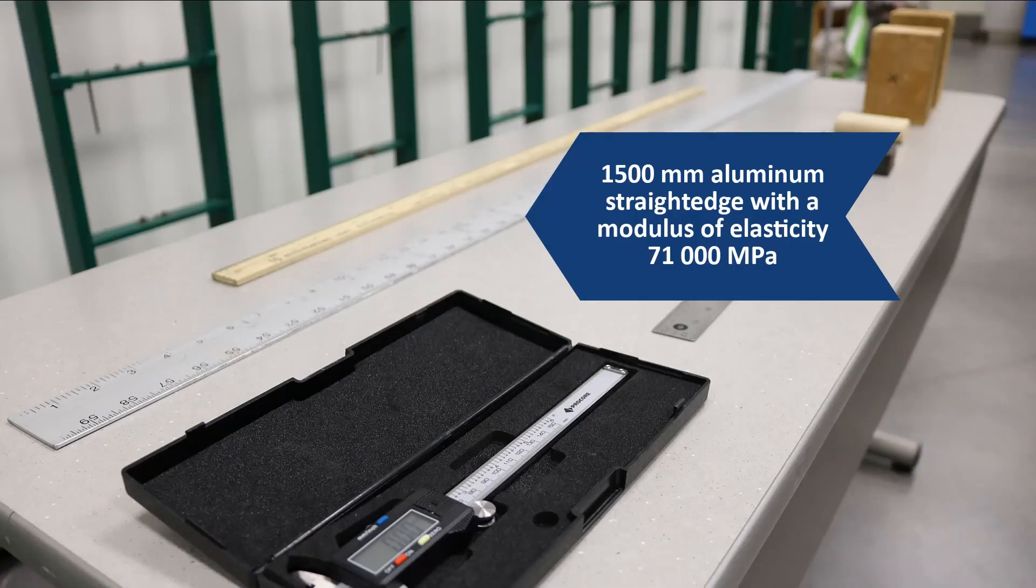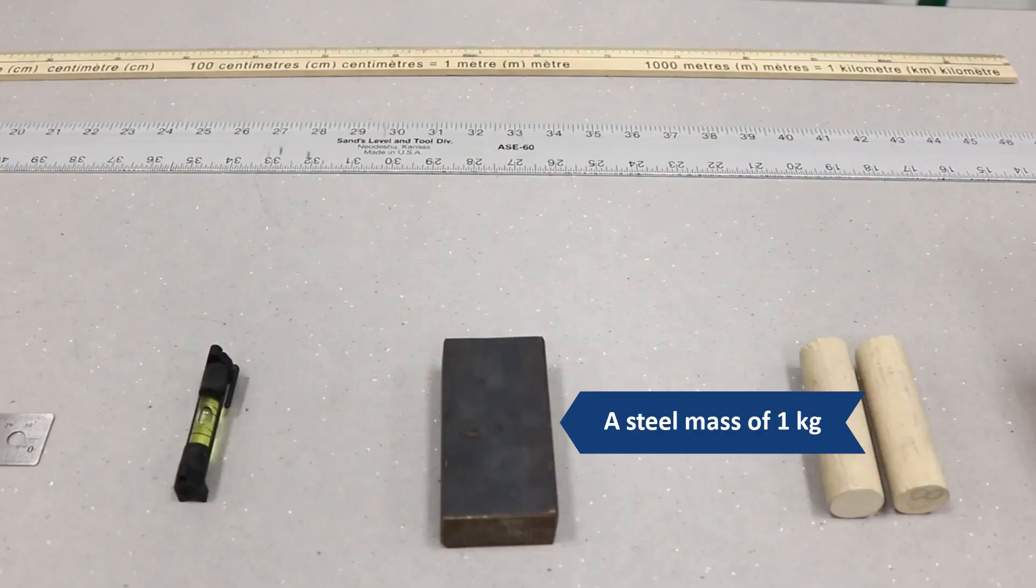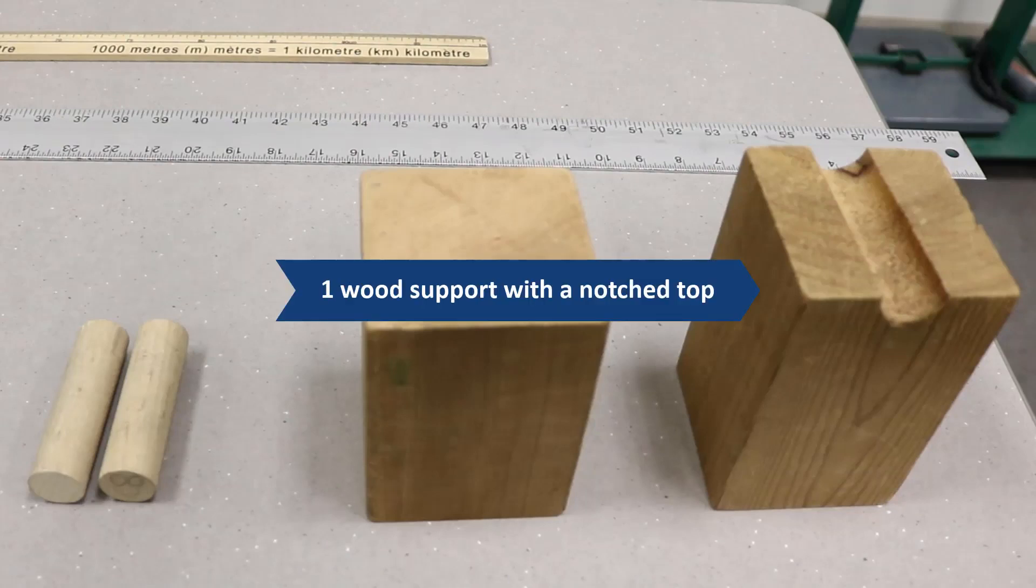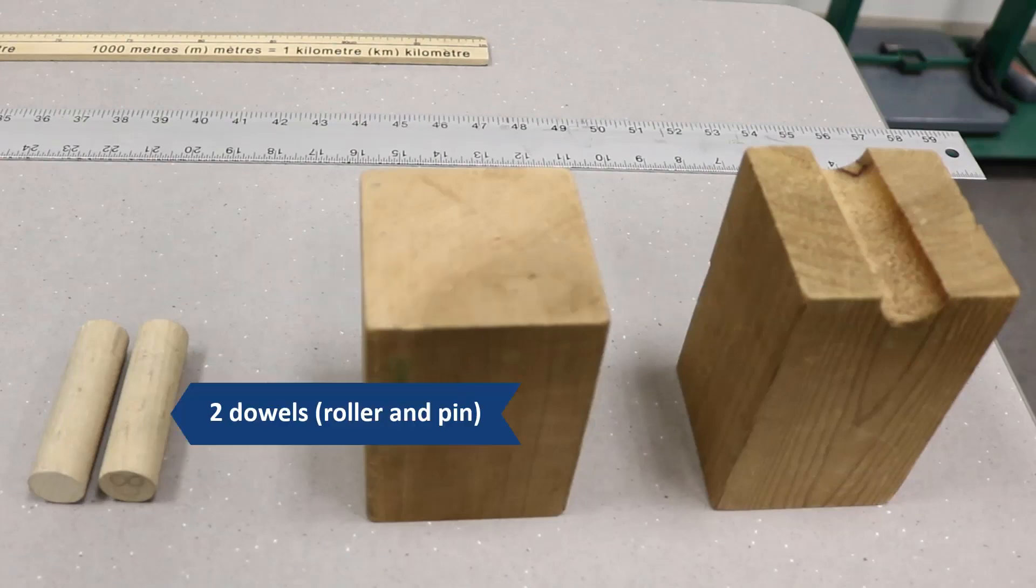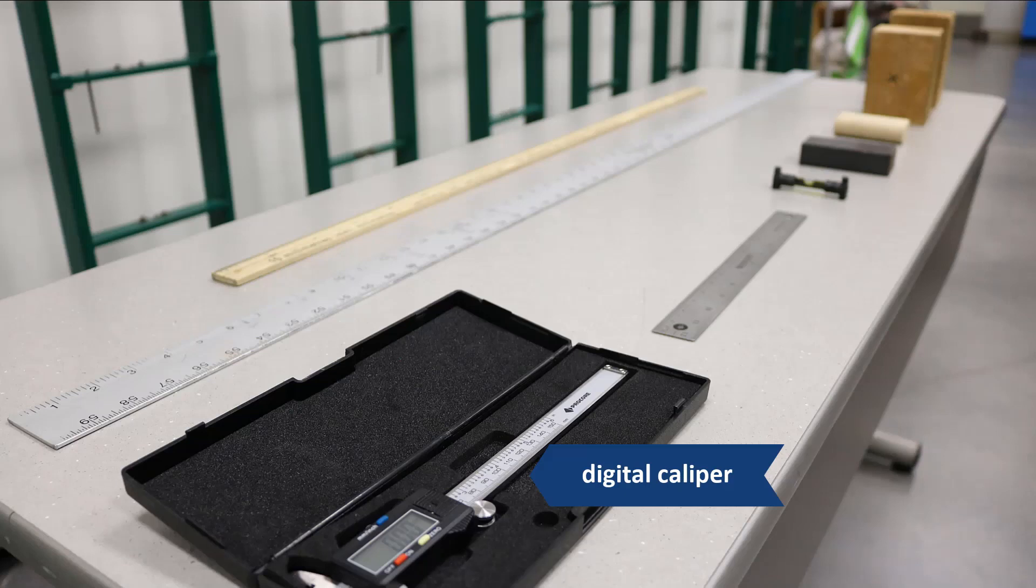In order to complete this lab, the following materials are required: a 1500 mm aluminum straightedge with a modulus of elasticity of 71,000 MPa, one wooden meter stick, a steel mass of approximately 1 kg, one wood support with flat top and one wood support with a notched top, two dowels (roller and pin), one spirit level, one steel ruler, and a digital caliper for parts 1 and 3.